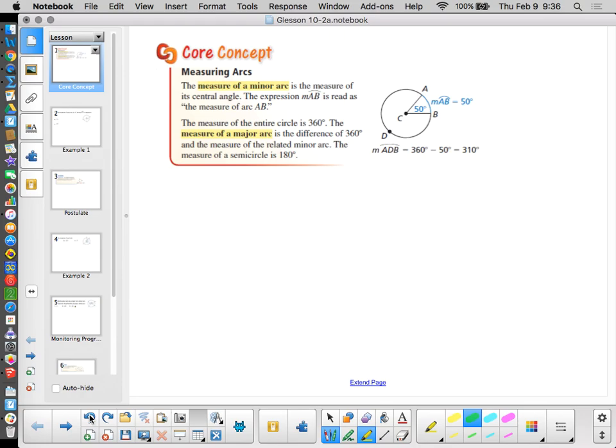So the measure of an arc is very simply the same as the measure of the corresponding central angle. A minor arc is an arc that is measured less than 180. A major arc is 180 or more. So the central angle is defined as an angle that has its vertex at the center of the circle. Hence the name central angle.